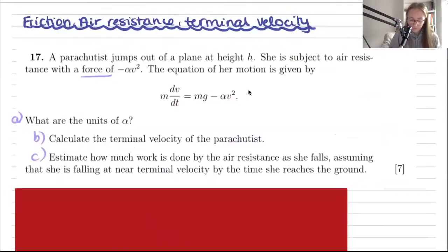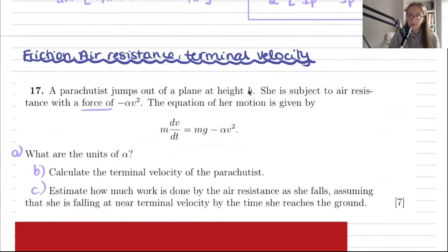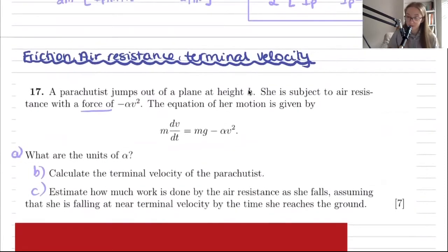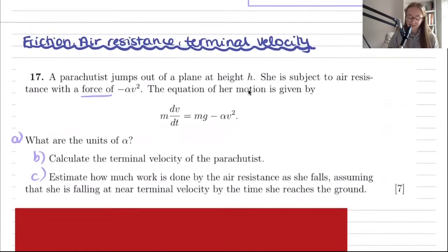Welcome to Part B of the mechanics section of the syllabus. The next part of the syllabus covers friction, air resistance, and terminal velocity. This topic is always illustrated with a parachutist jumping from an airplane.